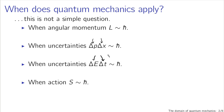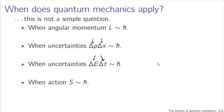Energy and time also have an uncertainty relation, again approximately equal to Planck's constant. Most fundamentally, the classical action — a quantity you learn about in advanced classical mechanics that has to do with the path a system takes as it evolves in space and time — if the action of the system is of order Planck's constant, then you're in the quantum mechanical domain. Planck's constant is a really small number: 1.05 times 10 to the negative 34 kilogram meters squared per second.